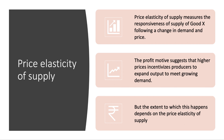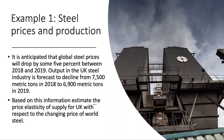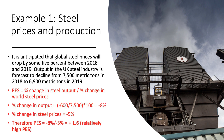Here are two examples of how to calculate price elasticity of supply. The first one relates to the steel industry. It's anticipated that global steel prices will drop by some five percent between 2018 and 2019. Output in the UK steel industry is forecast to decline from seven and a half thousand metric tons in 2018 to six thousand nine hundred metric tons in 2019. Based on this information, estimate the price elasticity of supply for the UK with respect to the changing price of world steel.